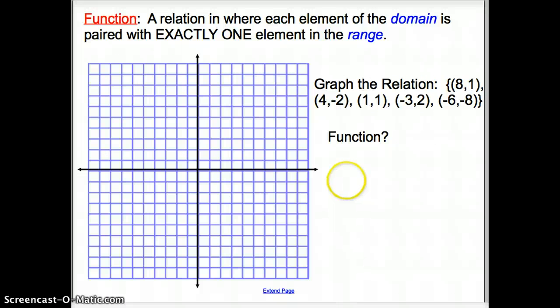Now a little bit to go along with the relation is a function. A function is a special type of relation. And it is a relation in which each element of the domain, so an x value, is paired with exactly one element of the range. So there is a y. So we have one x belongs to one y. One x belongs to only one y.